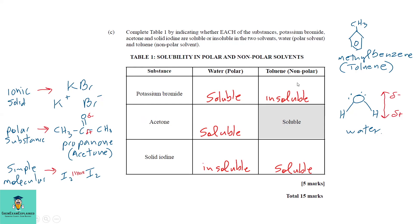The oxygen is electronegative, attracting electrons in the bond closer to itself and away from H, making H partially positive and O partially negative. Ionic substances dissolve in water because water is polar — it dissolves either ionic or polar substances. Toluene (methyl benzene) is non-polar.